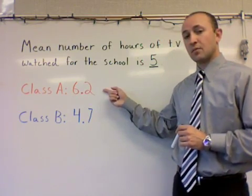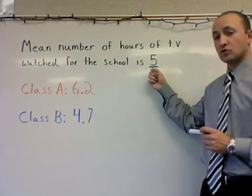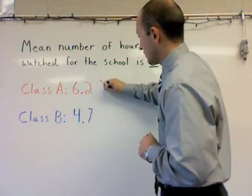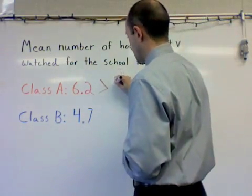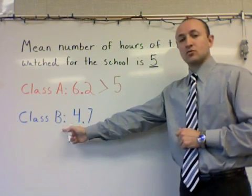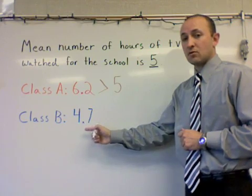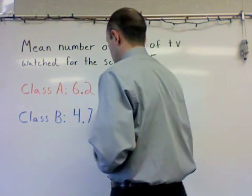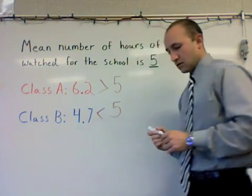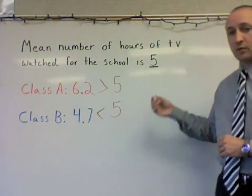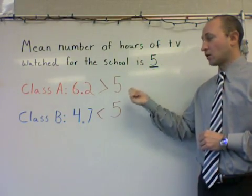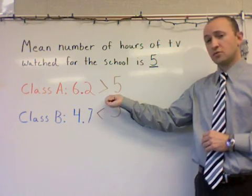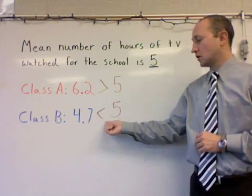We're going to look at our two samples and compare them to the mean for the whole school, which is five hours. Classroom A has a mean of 6.2 hours, which means classroom A has a greater or larger average than the school — 6.2 is definitely larger than five. Classroom B had a mean of 4.7 hours of television watched per day, which is actually a smaller average than the school's five-hour mean. So we located the mean for the entire population and compared it to our two sample classrooms: classroom A had a larger mean, and classroom B had a smaller mean than the total population.